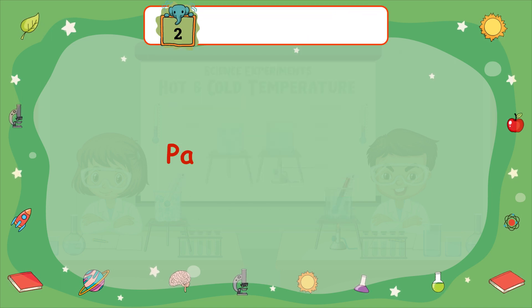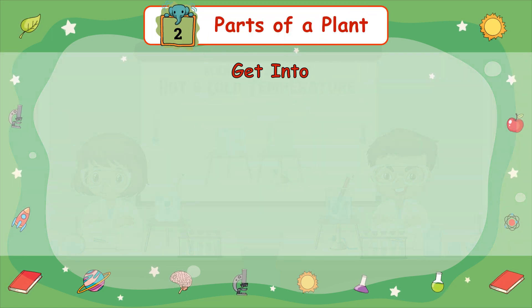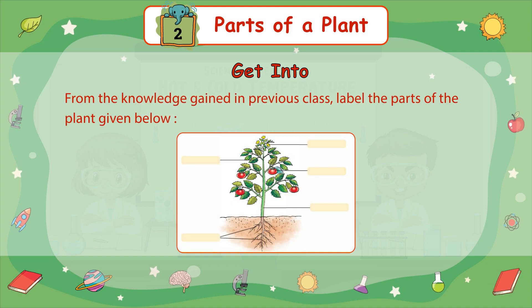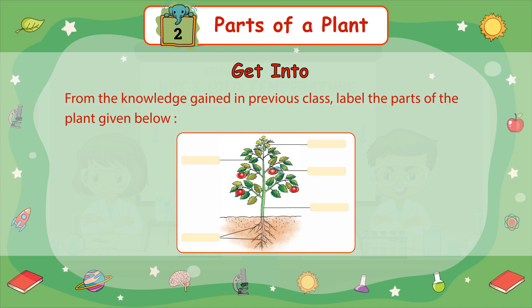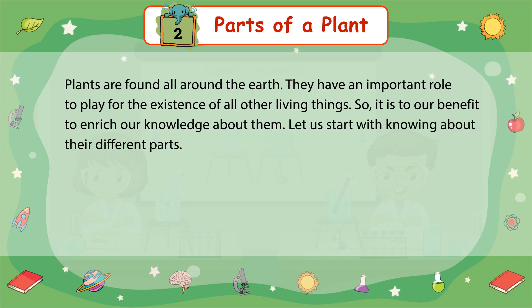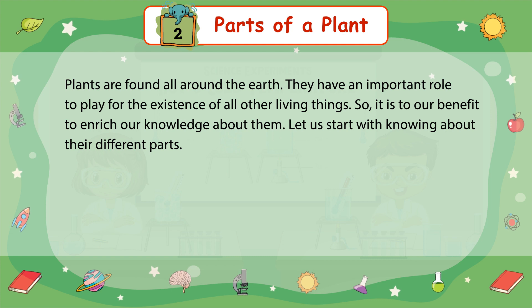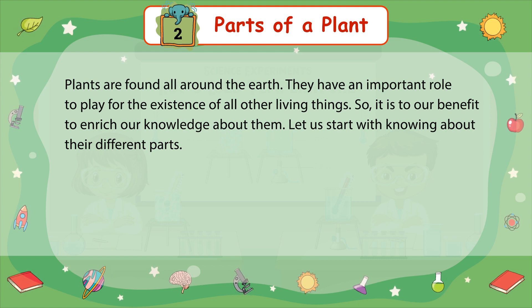Chapter 2: Parts of a Plant. From the knowledge gained in previous classes, label the parts of the plant given below. Plants are found all around the earth. They have an important role to play for the existence of all other living things. It is to our benefit to enrich our knowledge about them. Let us start by knowing about their different parts.